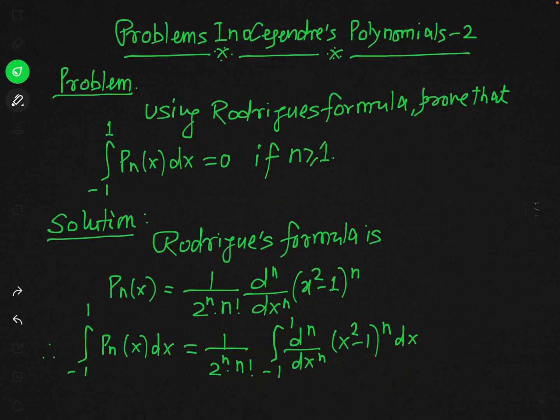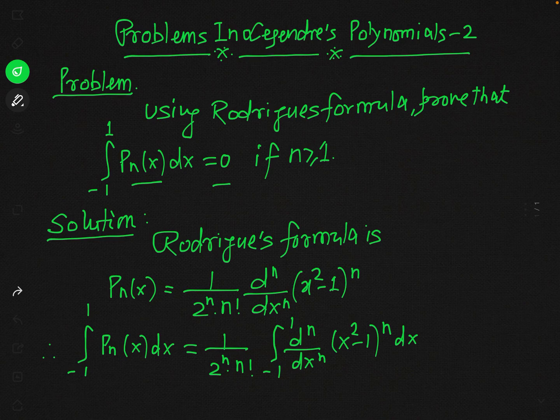Today we are going to solve a very important problem based on the Rodrigues formula. This problem says that using the Rodrigues formula we have to prove that the integral of Pn(x) from minus 1 to plus 1 will be equal to 0 if n is greater than or equal to 1. To solve this problem, let us start from the Rodrigues formula.